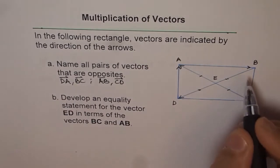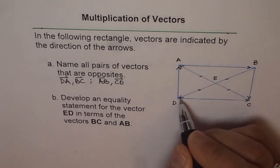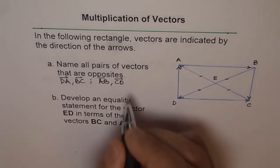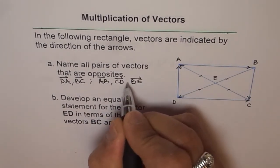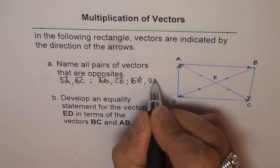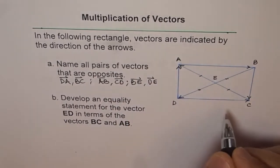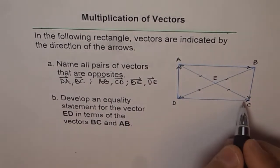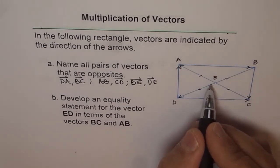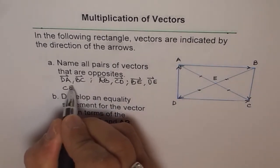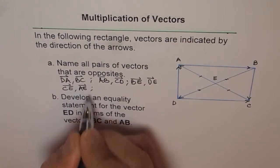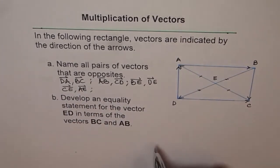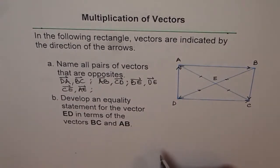And you can write BE and DE as opposite vectors. Similarly, you can also write CE and AE as opposite vectors. So, like this, you can give opposite vectors for this rectangle.